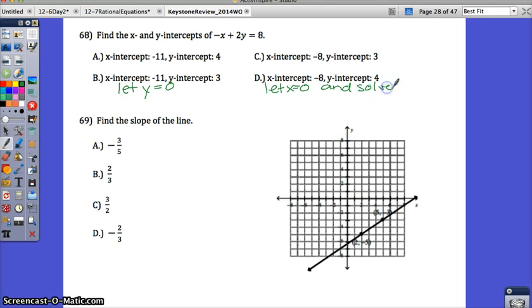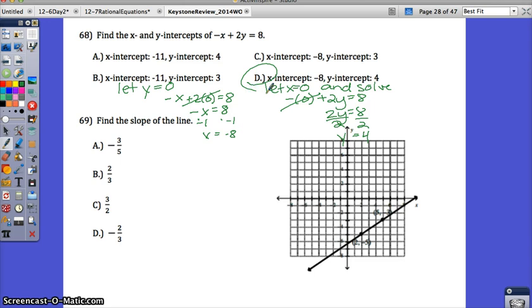So let's do this. If y equals 0, I would have negative x plus 2 times 0 equals 8. 2 times 0 is just 0, so I have negative x equals 8. Or divide by negative 1. And x equals negative 8. If I put 0 in for x, there's no such thing as a negative 0, so that's really just gone. And you have 2y equals 8. Divide by 2. And y equals 4. So your x-intercept is negative 8. And the y-intercept is a positive 4. Your correct answer is D.